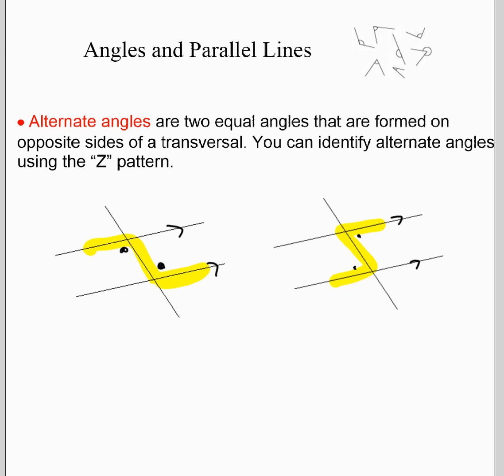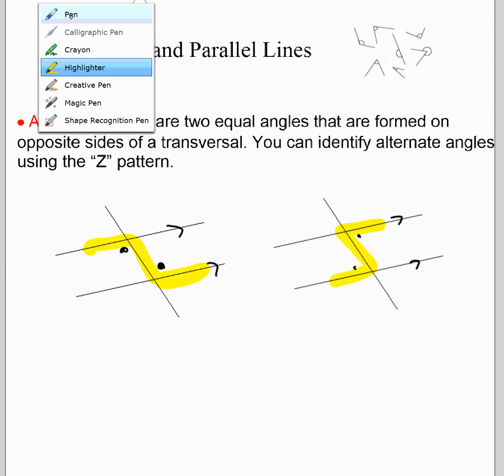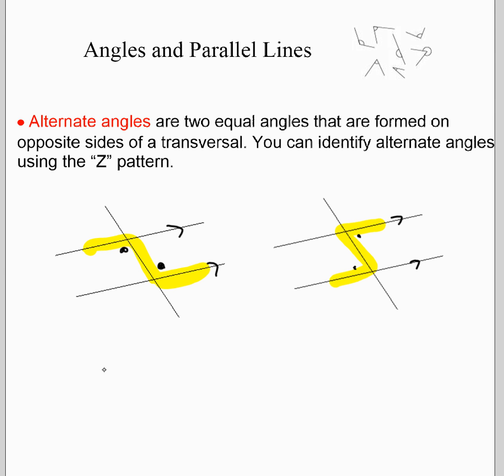Sometimes it's not actually a letter Z. In fact, sometimes, depending on how your transversal is, it might actually kind of look like a letter N. So for example, if I had this, and there was my parallel lines, my Z pattern is going to kind of look like that, which only looks like a Z if you kind of turn it around. The Z pattern helps you identify alternate angles. Again, alternate angles are on either side of a transversal, and they are equal.